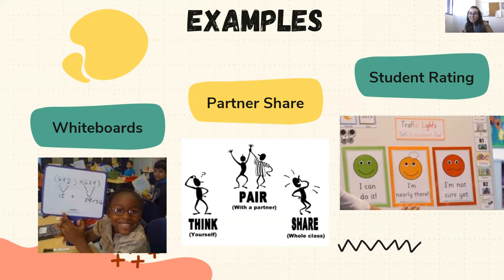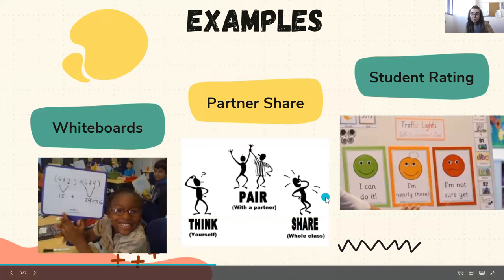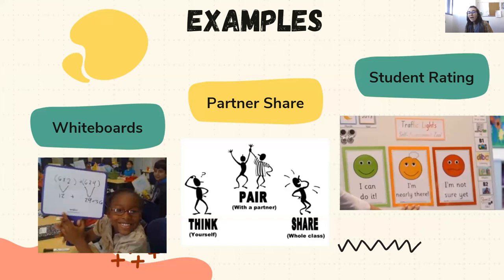Whiteboards work for any subject area, not just math. You could put a multiple choice question on the board, have students write A, B, C, or D, cover it with their hand, and then hold it up. Partner share is another great formative assessment technique. You pose a question to the class — like 'Who was the main character in the story?' or 'What's the adjective in this sentence?' — give students time to think, then have them share with a partner. You can call on a couple of students to share their answers with the class.